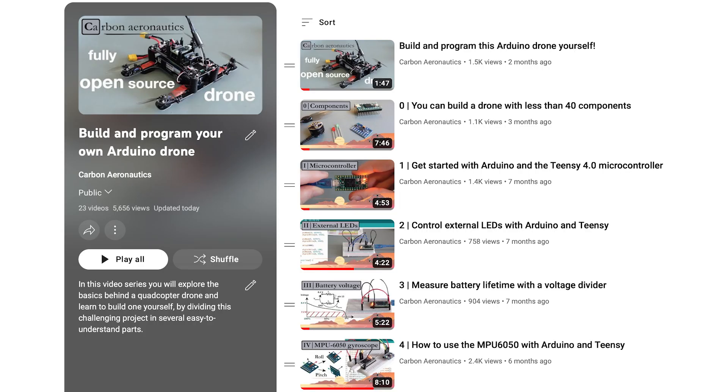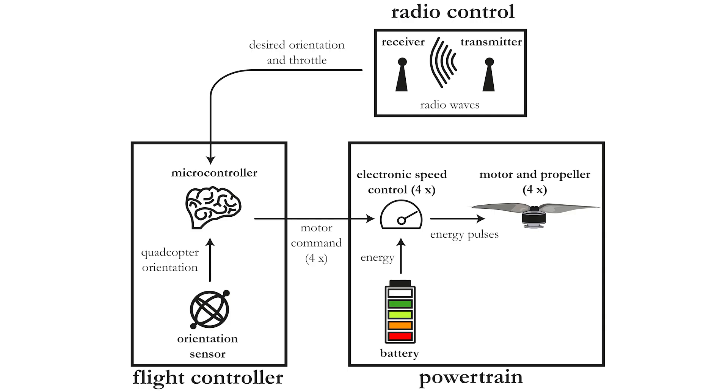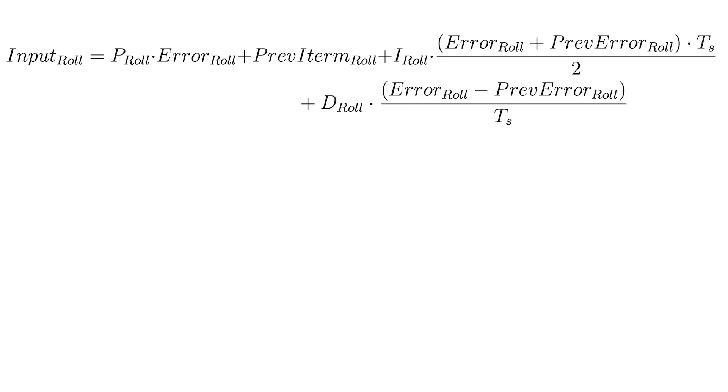Previous video series focused on building and programming a fully open source quadcopter drone. We combined and programmed a radio control system, flight controller and powertrain. When we developed our PID controller, we saw different numbers for the PI and D values.